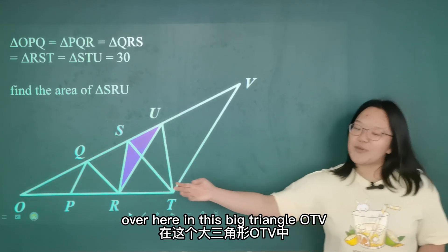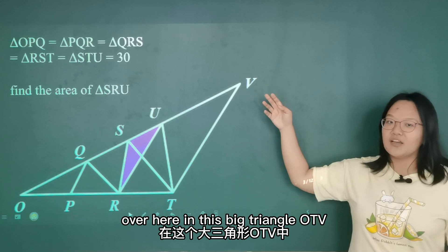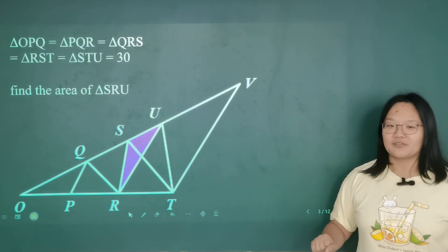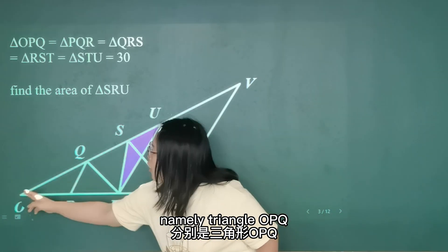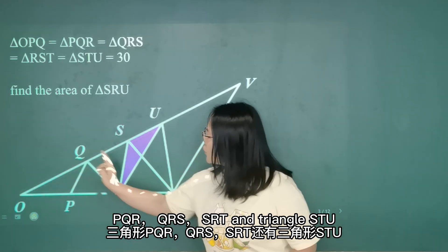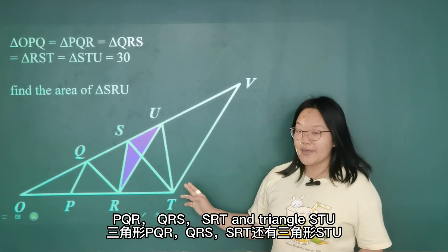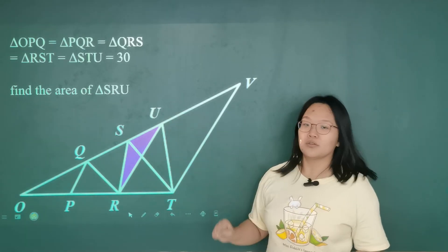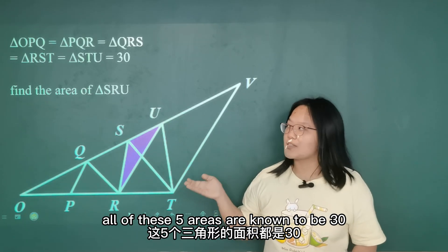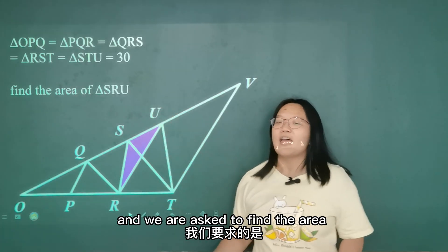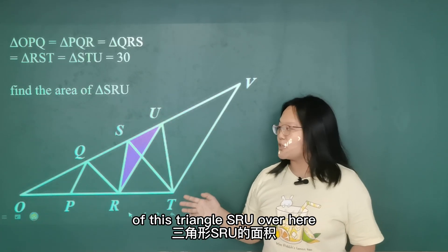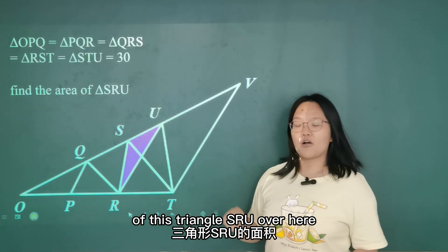Over here, in this big triangle O, T, V, five areas are known. Namely, triangle OPQ, PQR, QRS, SRT, and triangle STU. All of these five areas are known to be 30. And we are asked to find the area of this triangle SRU over here.